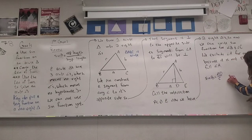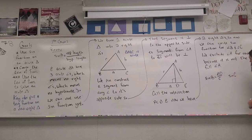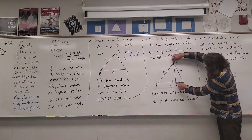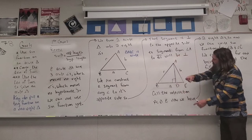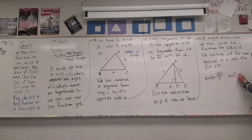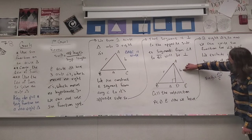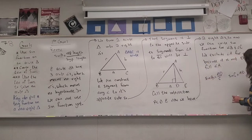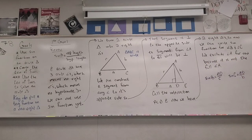We exclude angle A for now because it is not a full angle — it's cut up into two pieces. Notice that both equations have the length AD in common, and we're going to exploit this shortly.